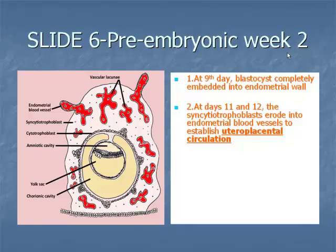Also in days 11 and 12, the primary yolk sac forms, and part of the cytotrophoblast differentiates into extraembryonic mesoderm. The extraembryonic coelom, derived from this extraembryonic mesodermal space, eventually grows into the chorionic cavity.